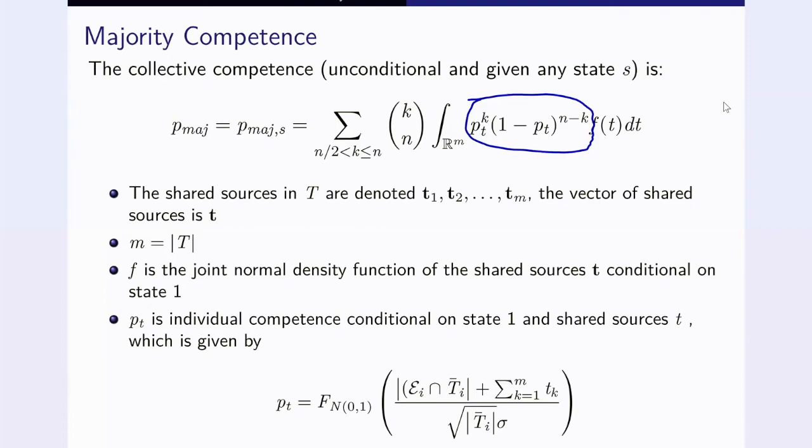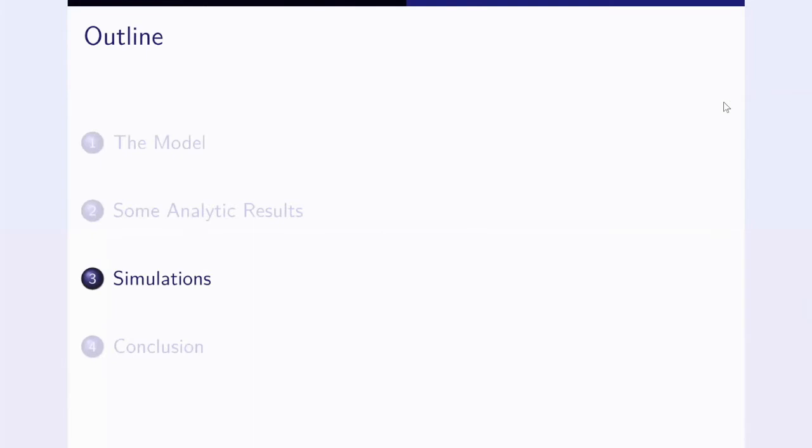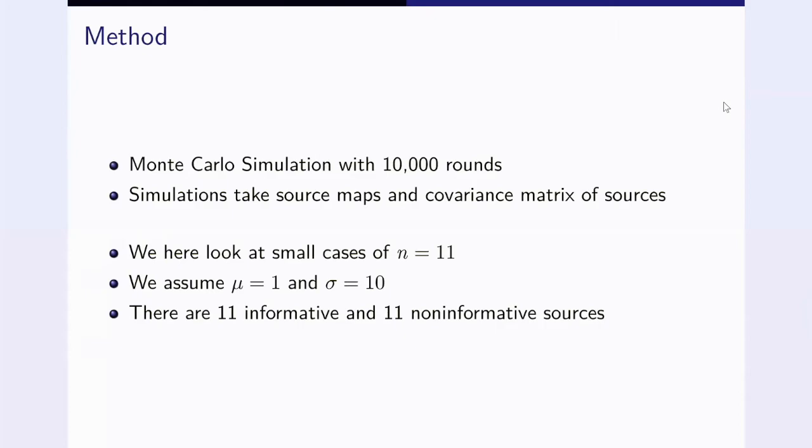I should jump forward and say something about the simulations. This is a Monte Carlo simulation with 10,000 rounds and the simulations take as input the source map, which sources are connected to which votes and the covariance matrix of the sources. Right now, we keep everything very simple and don't introduce any correlation. But in principle, one could do much more complicated things and also take correlation into account. I've just started by looking at a really small group with n equals 11. The mean of these Gaussian distributions is 1 and the sigma is 10, so that the information that you get from just one source is not excessively large. We assume that there are 11 informative and 11 non-informative sources.